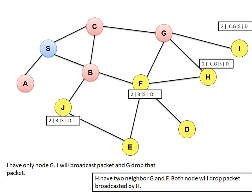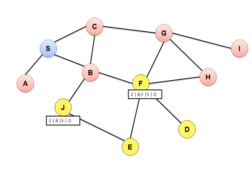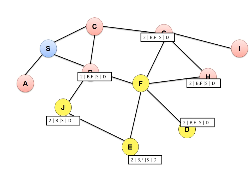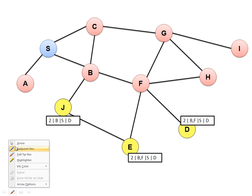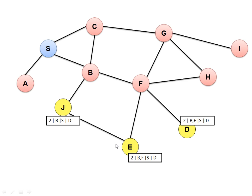Nodes I and H repeat the same process. I mentions its own address and broadcasts to its neighbor — I has only one neighbor, G, who already broadcasted that packet, so G drops it. H broadcasts to G and F; they already sent or received the same copy, so they also drop the packet. Node F broadcasts the packet by mentioning its own address in the second field; B, G, and H drop it, while other nodes keep the packet.